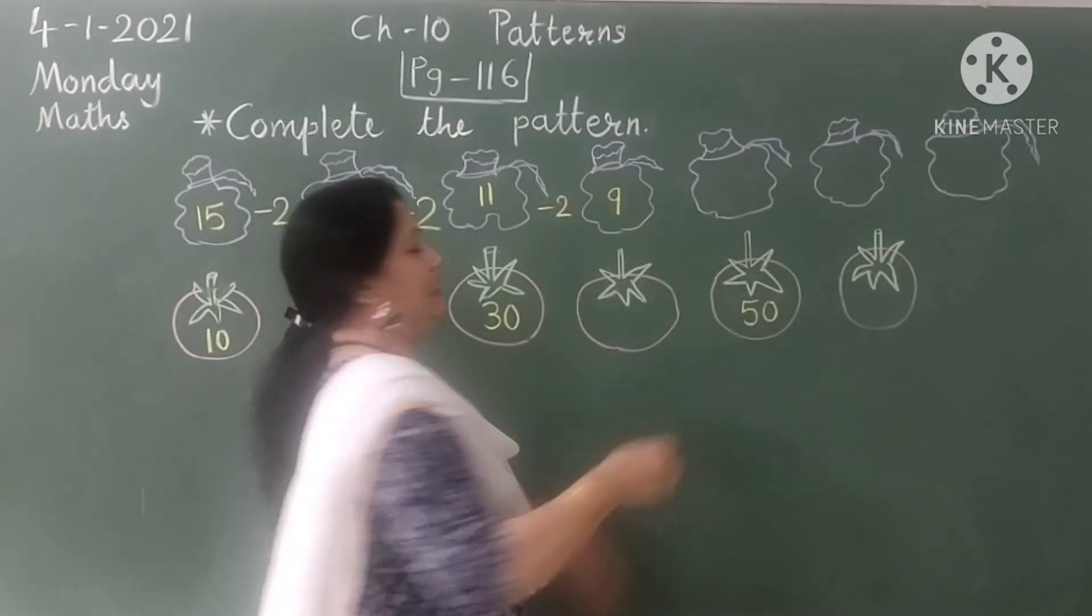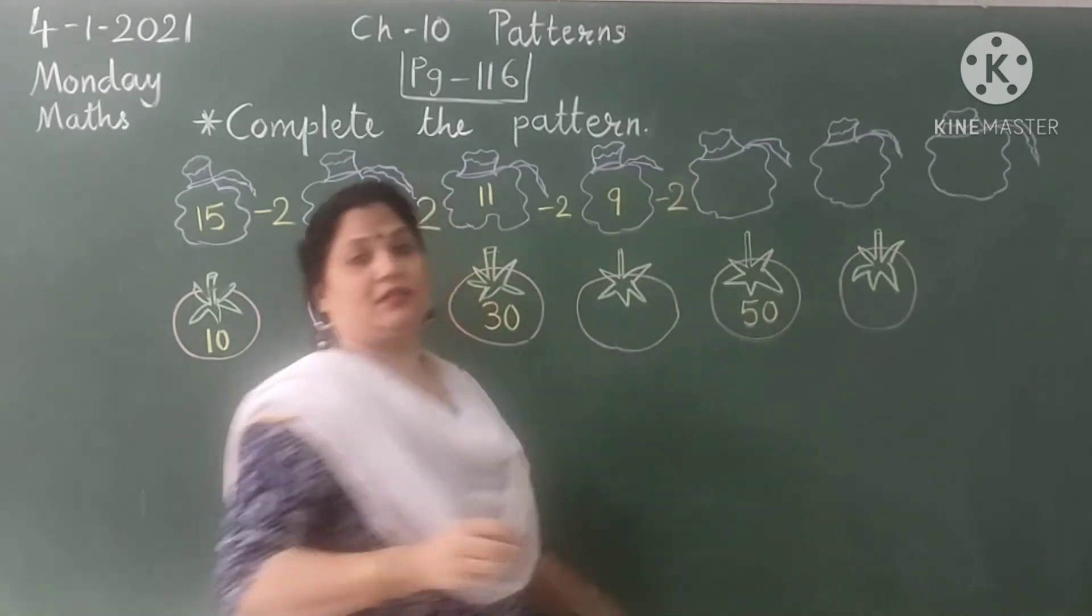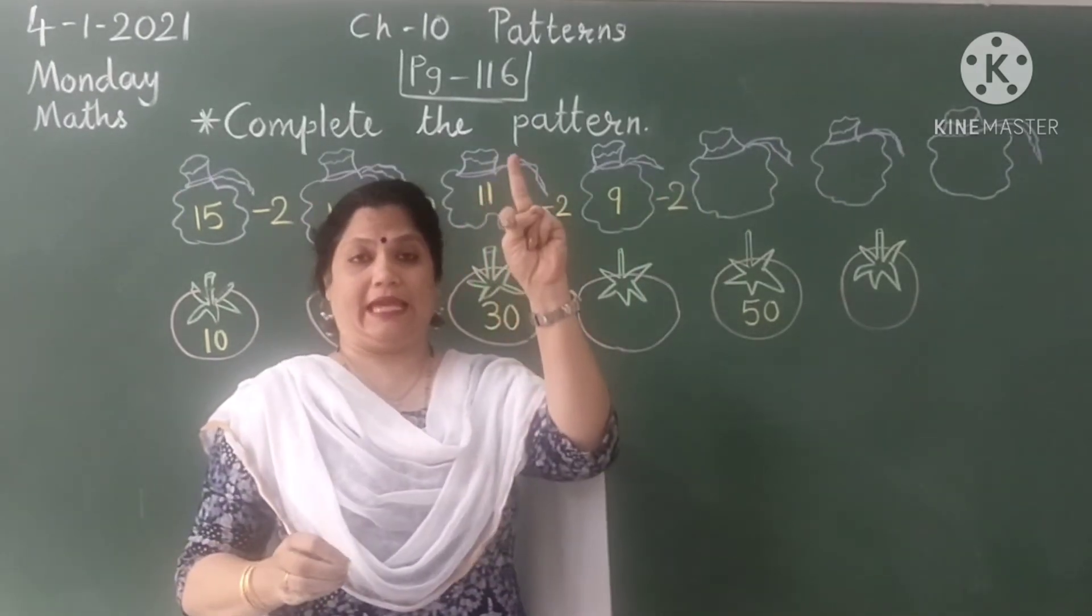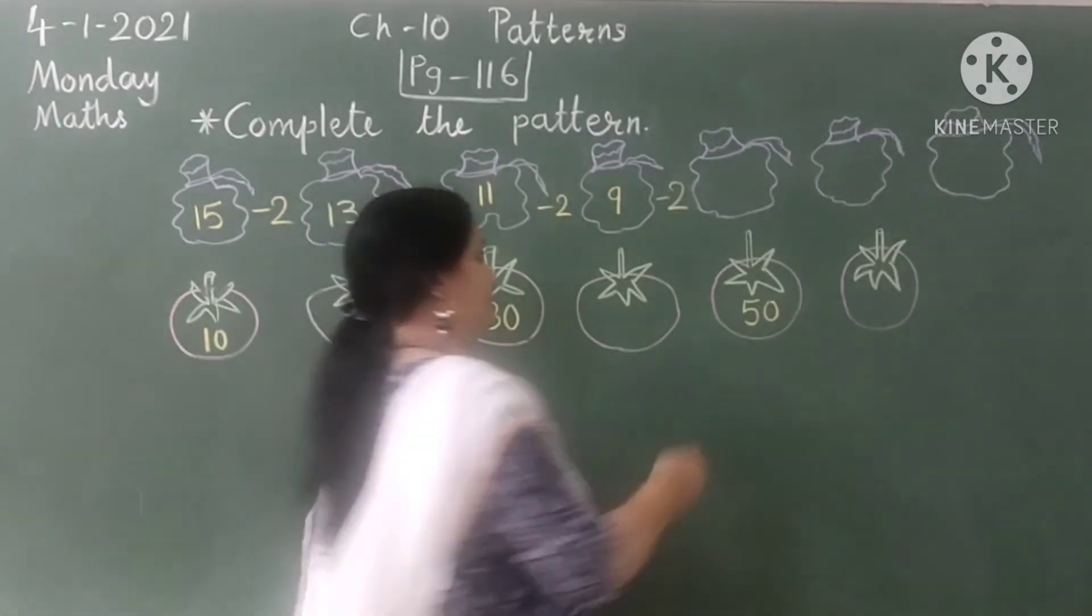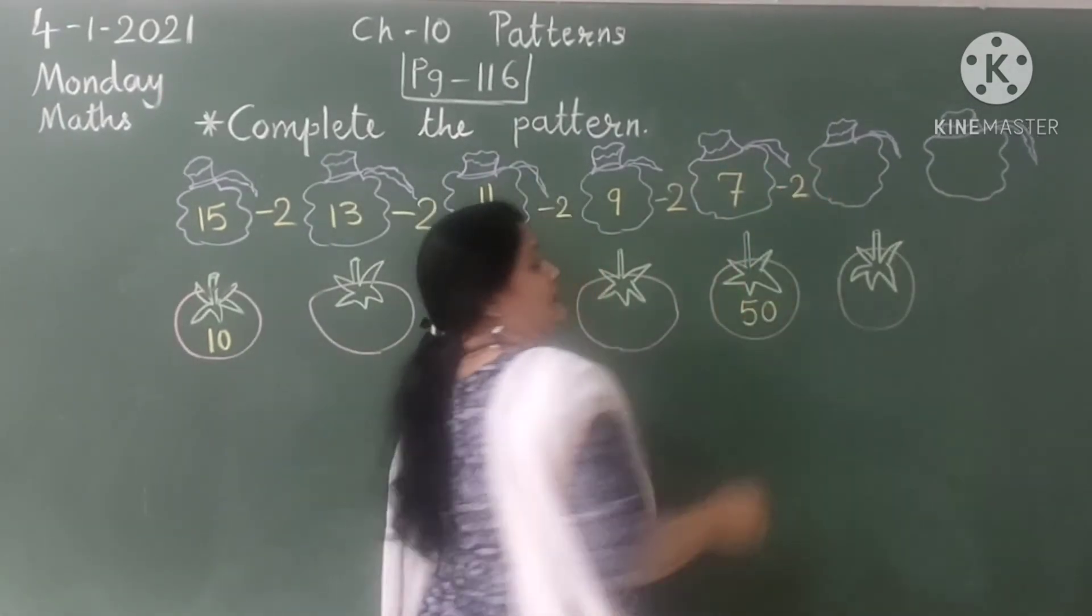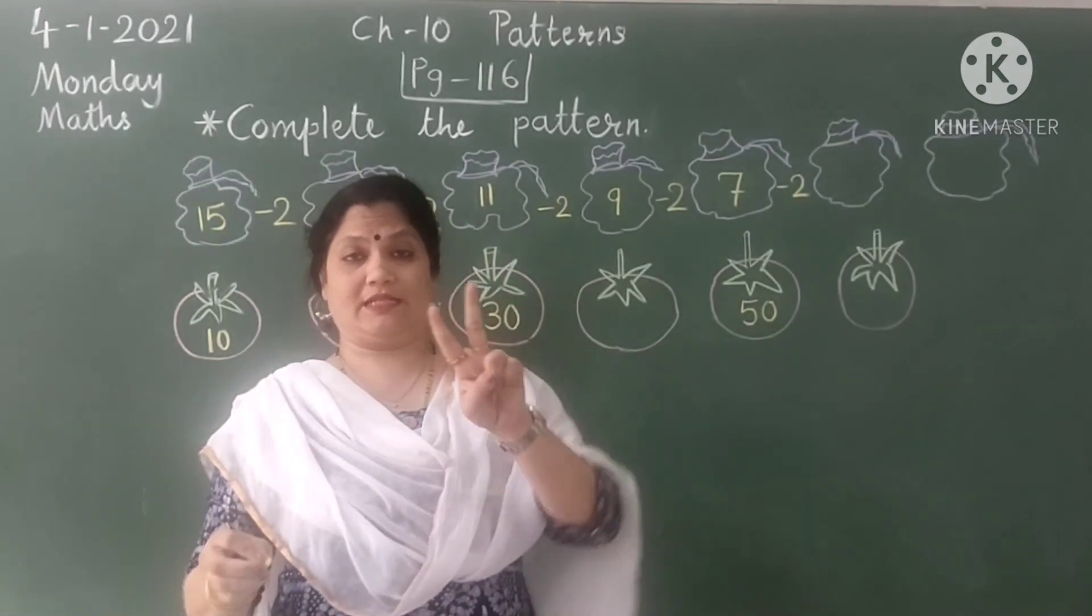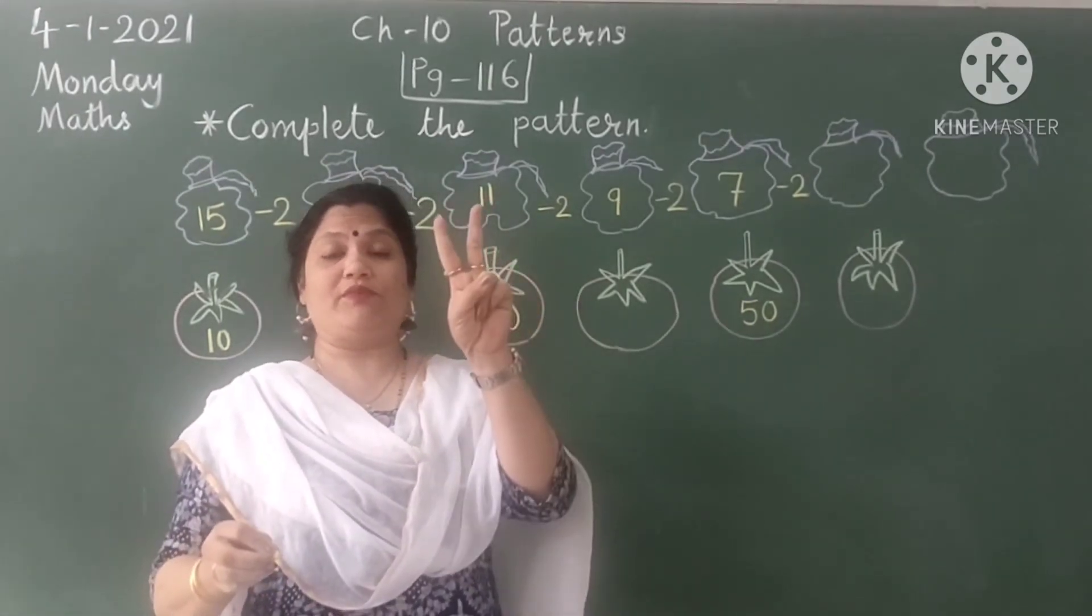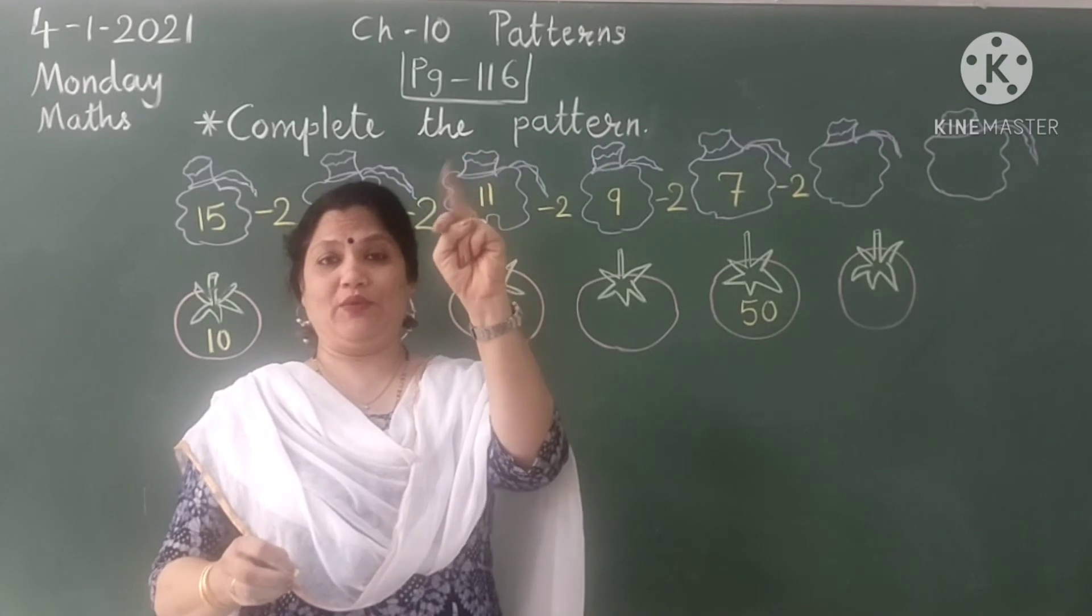In 9, let's subtract 2 more. So before 9 is 8, 7. Let's subtract 2 more numbers from 7. So before 7 is 6 and 5.